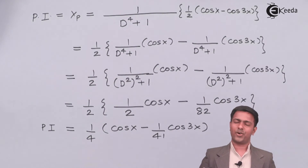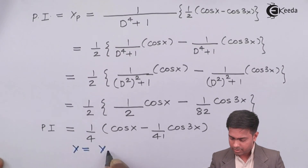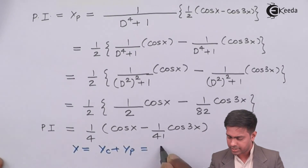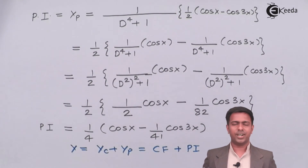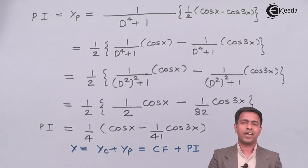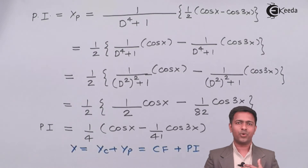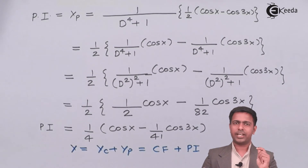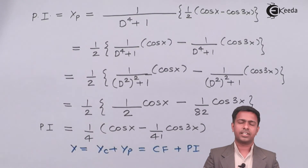We now have both the complementary function and the particular integral. The final solution is y = yc + yp — just combine those two values. Subscribe to ekira.com for more engineering mathematics videos, press the bell icon for notifications, and share this video with friends.